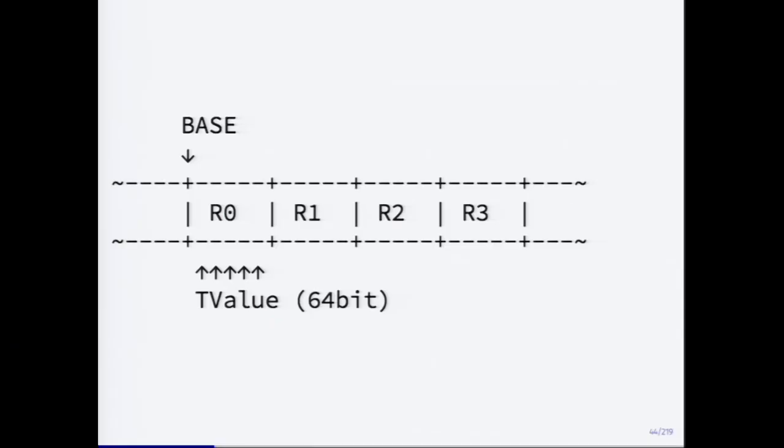The state of the interpreter looks like this: there is a base pointer, which can be compared to the frame pointer in x86 architecture. There is a sequence of 64-bit tagged slots, and you can address them from your instructions as registers, essentially. That's it — very simple. So if you have an operation that says 'add 0, 1, 3', it means add register 1 and register 3 and store the result in register 0.